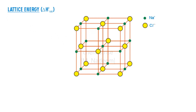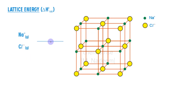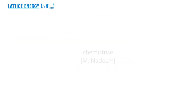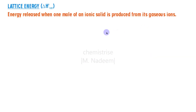Lattice energy is the energy released when we produce the ionic lattice from its gaseous ions. Here we have sodium ions in the gaseous state and chloride ions also in the gaseous state. When these gaseous ions attach together to make one mole of ionic solid, the energy released in this process is known as lattice energy. So lattice energy is the energy released when one mole of an ionic solid is produced from its gaseous ions.